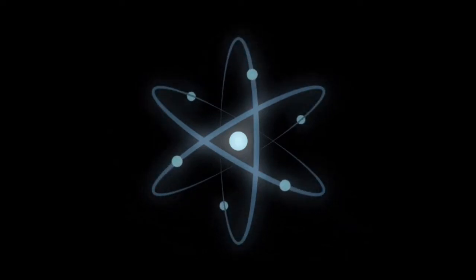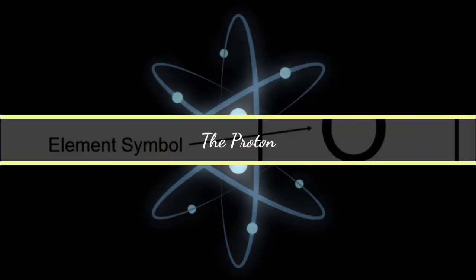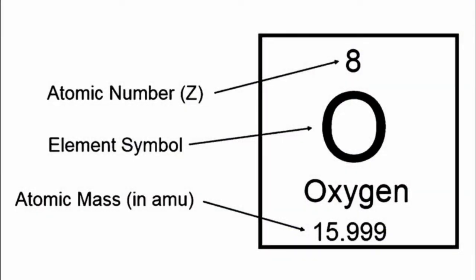There are three main building blocks that make up an atom. The first one is commonly known as the proton. The proton is actually what defines the atomic number of the atom.